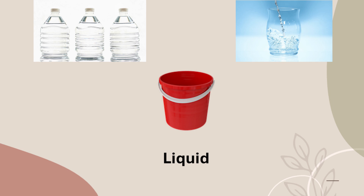Moving on to liquids. Liquids do not have a fixed shape like solids, but they definitely have a definite volume. Liquids take the shape of the container in which they are kept. For example, when you pour water into a bottle it takes the shape of the bottle, and if you put it in a glass it takes the shape of the glass. Liquids cannot be compressed easily, so the volume remains the same.